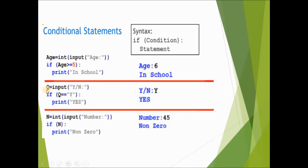In the next example, q is a variable storing input — entering y or n. Since we're entering a string or character (not an integer), we don't write int. Directly writing input() will by default take it as a string. You can also write str explicitly, but it's optional. If you press 'y', the string 'y' is stored in q.